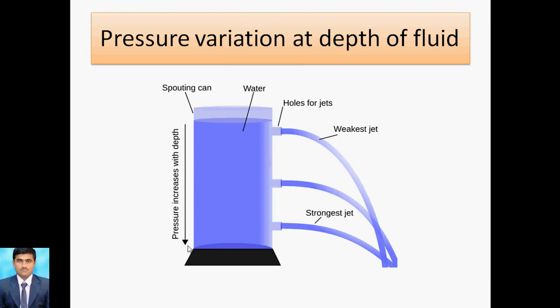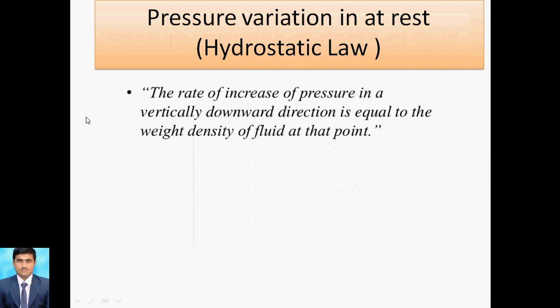Now we look at pressure variation with depth. Consider a sporting can with three holes at different depths. While increasing the depth, the pressure increases. From the holes we create jets — the jet at the bottom is the strongest, the middle is moderate, and the top is weakest. So pressure at the bottom is maximum. That's why we measure pressure at the bottom.